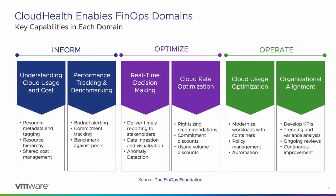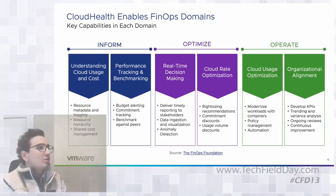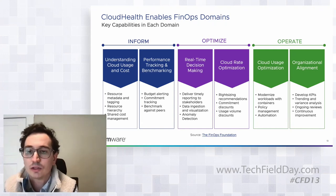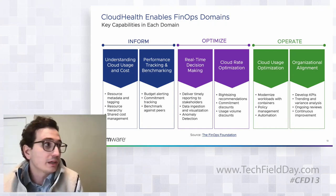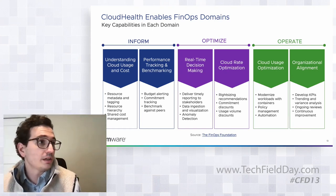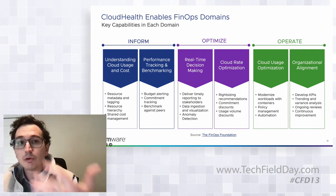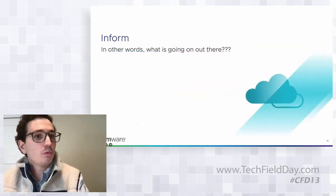How does this apply to FinOps, and how can we help you achieve excellence in each domain? It breaks down into understanding your cloud cost and usage, tracking performance and setting benchmarks, leading into optimization so you can make better decisions in near real-time — optimizing rates through Microsoft negotiations, right-sizing, or identifying volume discounts for reservation purchases. Finally, getting to the optimized space: seeing consumption patterns, determining whether workloads belong on EC2 or Lambda, and developing KPIs so everyone speaks the same language about operating efficiently in the public cloud.